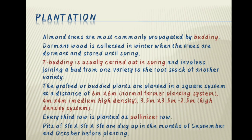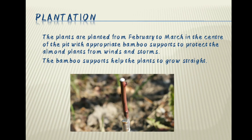Almond trees are most commonly propagated by budding. Dormant wood is collected in winter when the trees are dormant and stored until spring. Debudding is usually carried out in spring and involves joining a bud from one variety to the root stock of another variety. The grafted or budded plants are planted in a square system at a distance of 6m x 6m for normal farmer planting, 4m x 4m for medium high density, and 3.5m x 3.5m to 2.5m for high density system. Every third row is planted as a pollenizer row. Pits of 3ft x 3ft x 3ft are dug in September and October before planting. The plants are planted from February to March with appropriate bamboo supports to protect them from winds and storms.